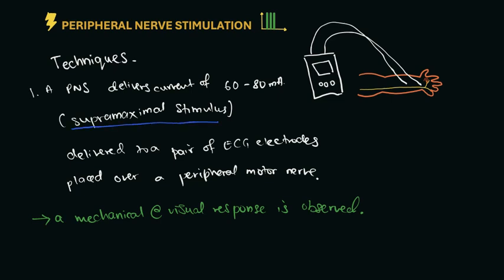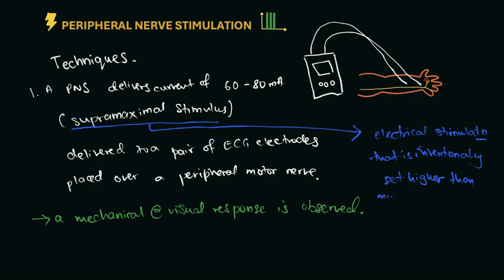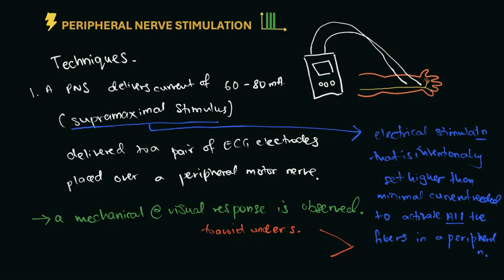It is important in peripheral nerve stimulation that we deliver supramaximal stimulus, which is an electrical stimulation that is intentionally set higher than the minimal current needed to activate the fibers in the peripheral nerve. Why is that so? This is because we want to avoid under-stimulation and also ensure all twitch responses are due to neuromuscular blocking effects.